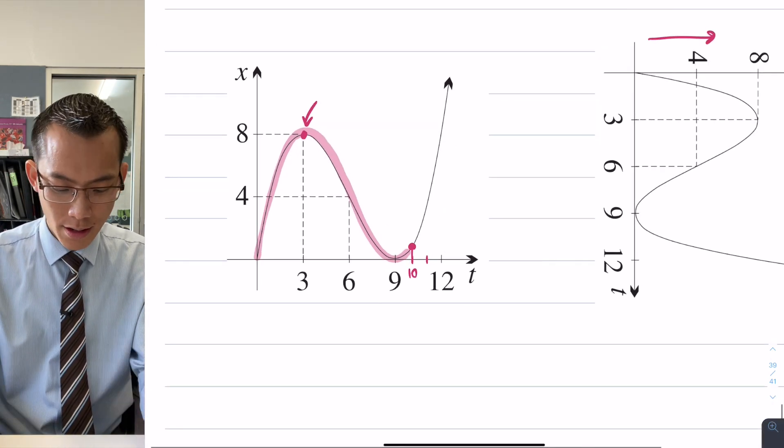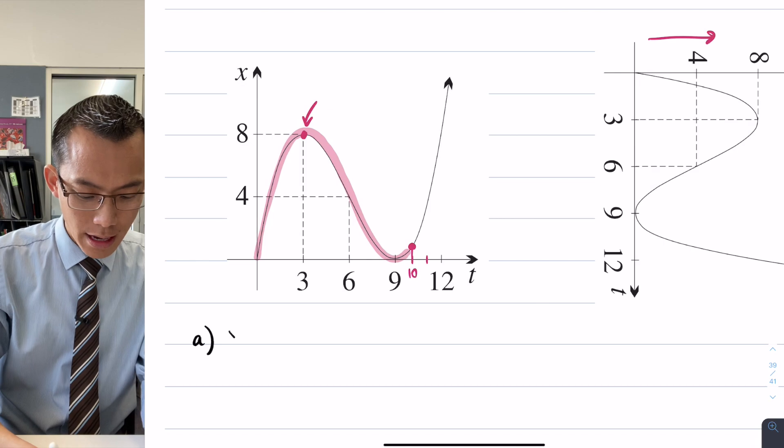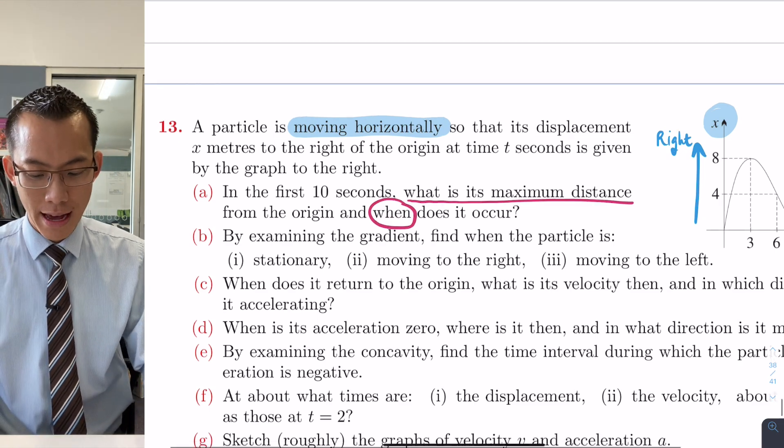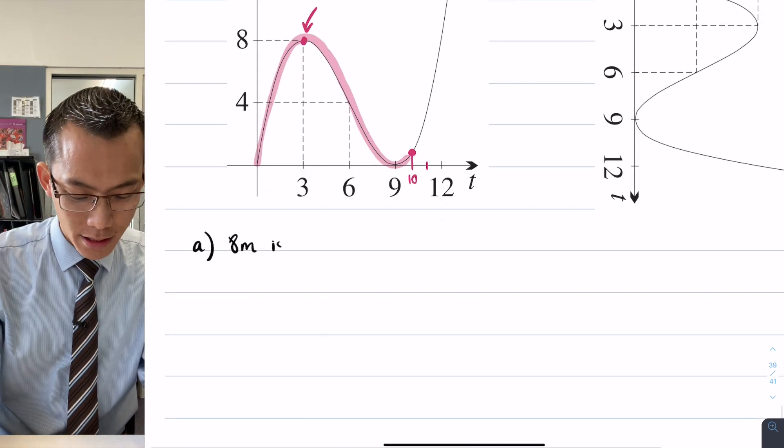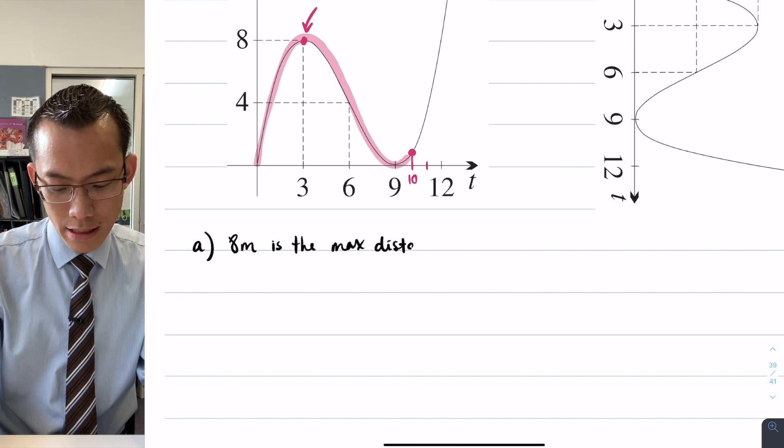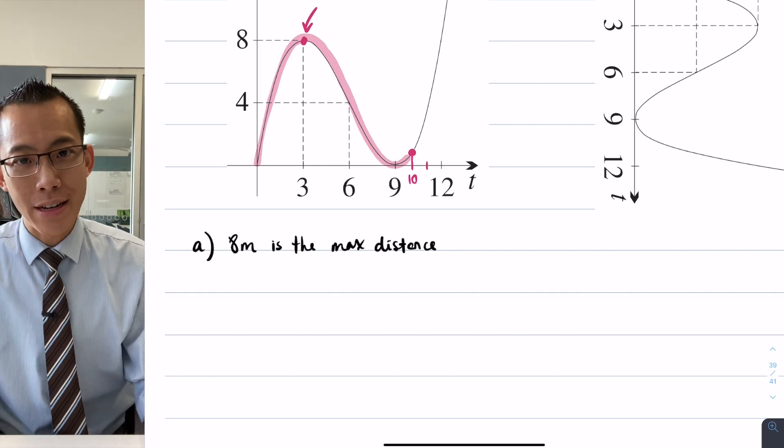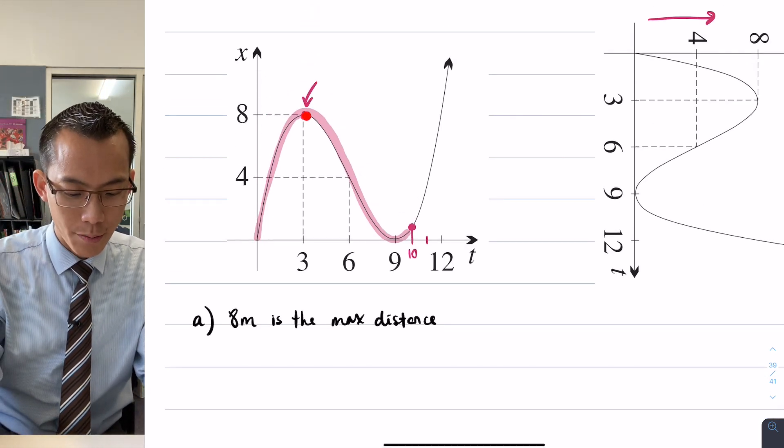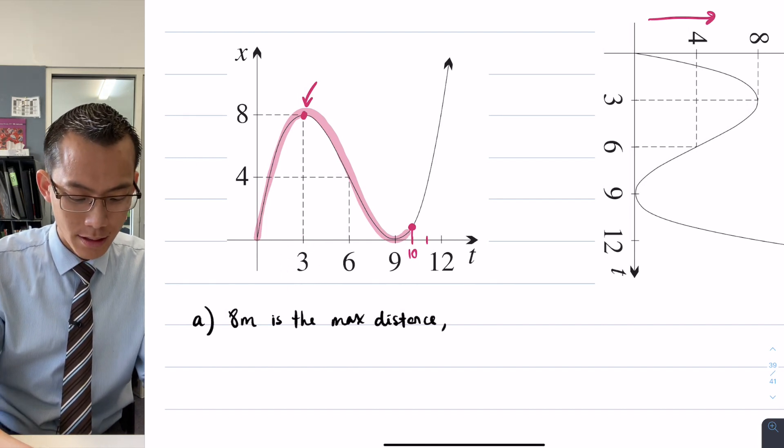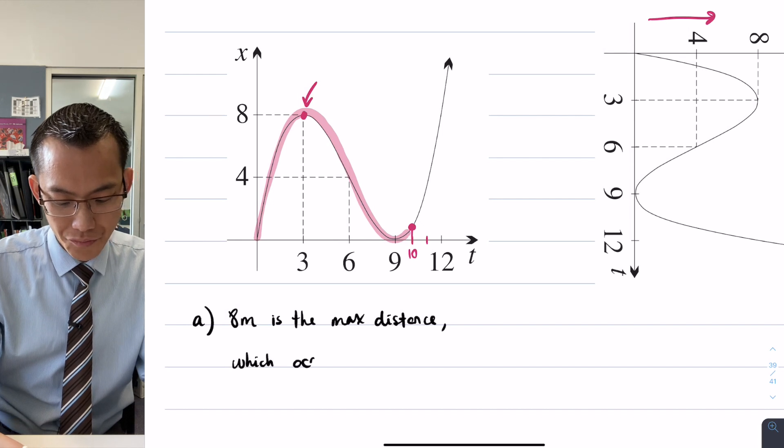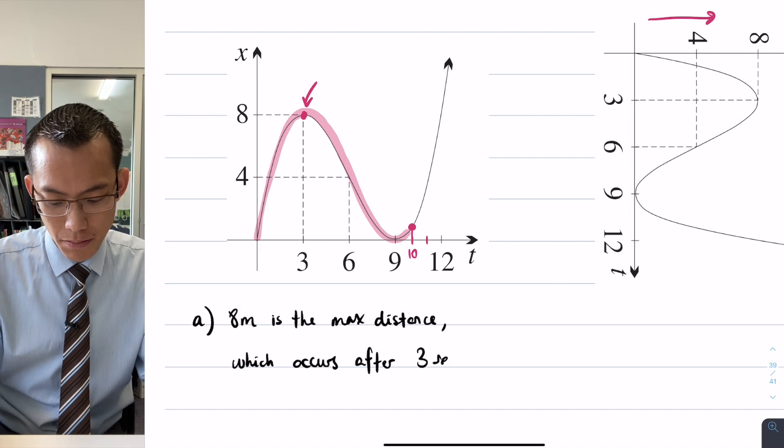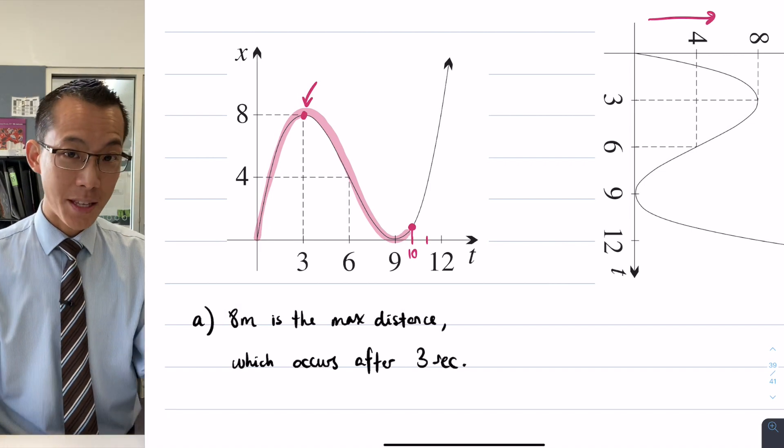So I can start to write some answers now. The greatest distance is 8 meters, and because it's a question of distance, doesn't matter whether it's to the left or the right, so I can say 8 meters is the maximum distance. And then the next thing they ask is when does that occur? So because it's a when question, I'm going to go down to the time axis, and you can see it goes all the way down from this point down to time equals 3. So 8 meters is the max distance, which occurs at or after 3 seconds. Okay, so there's part A, not too dramatic.